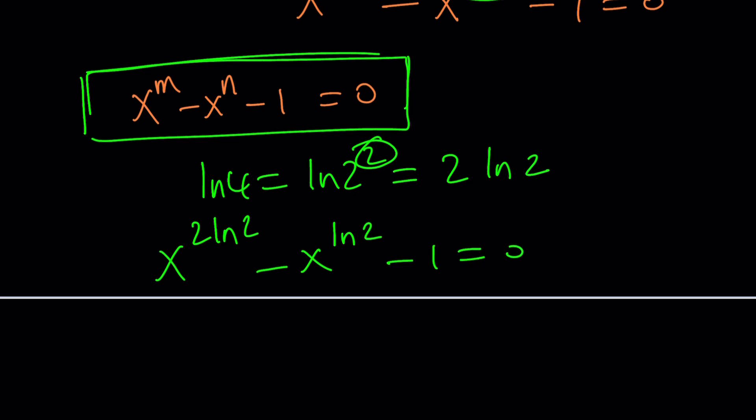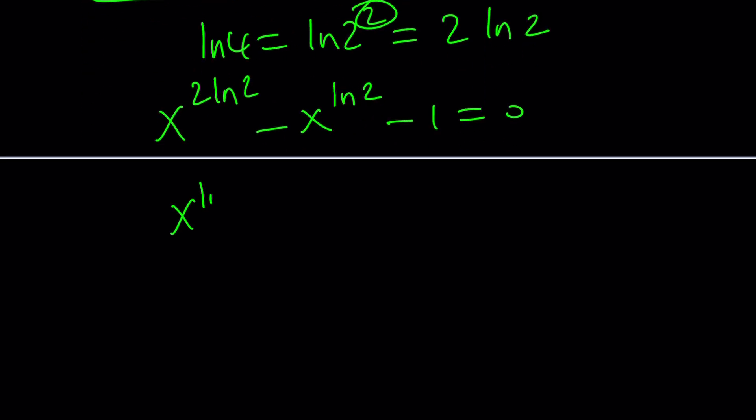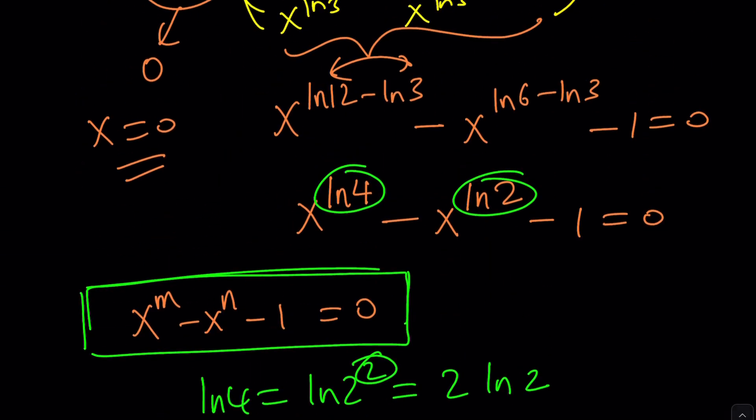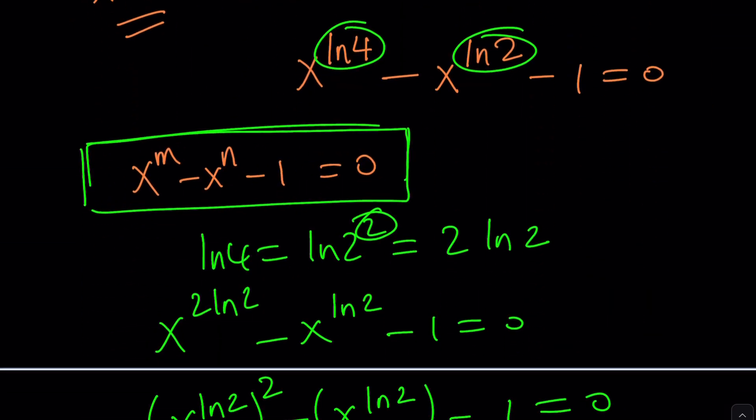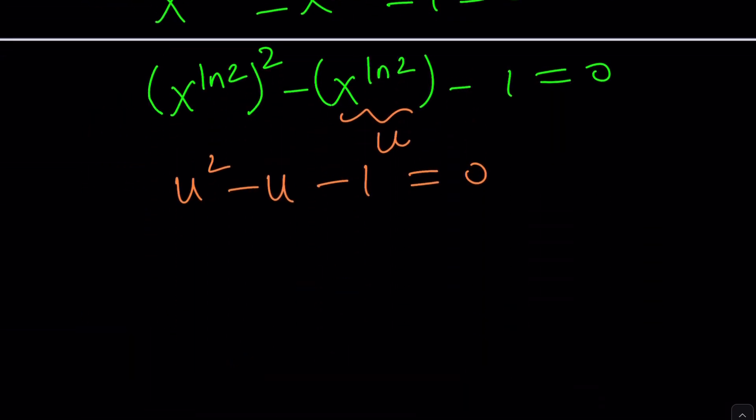So what? Here is where the fun part starts. We can write this as x to the power ln2 squared and then x to the power ln2 minus 1. Notice that I put that expression in parentheses because I'm going to call that something else. How about u? Let's call this u. We get u squared minus u minus 1 equals 0. Then this is just awesome. We were able to turn this into a quadratic equation, but it took some effort, didn't it? It's kind of painful. Yes, I agree. But at the end, it worked out. So now we can solve it.